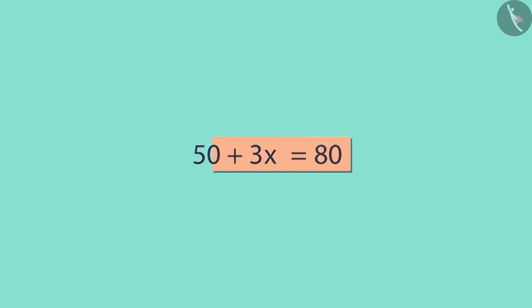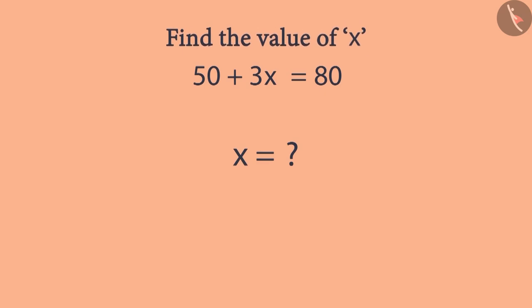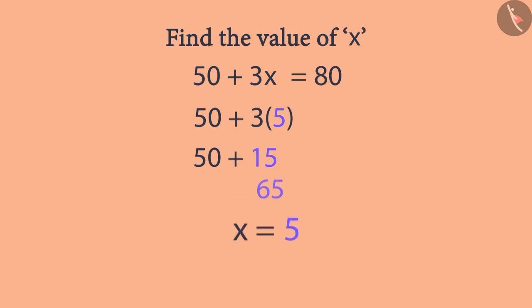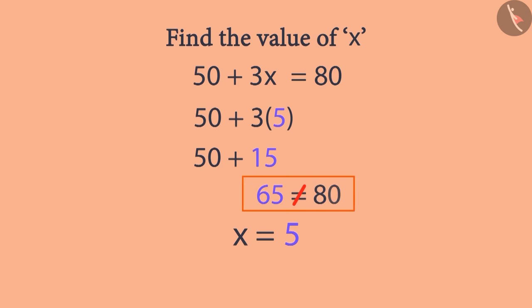Let's play a game — find out the value of X. For example, if we assume the value of X as 5, then the value on the left-hand side will be the sum of 50 and 15, which equals 65. But this is not equal to 80, which means 5 is not the correct answer. So what can be the correct answer?